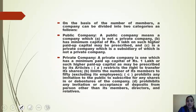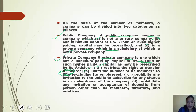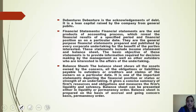On the basis of number of members, companies can be divided into public company and private company. A public company has a minimum capital of five lakh rupees. A private company has a minimum paid-up capital of one lakh rupees, restricts the right to transfer shares, limits the number of members to 50, prohibits any invitation to the public to subscribe for shares, and prohibits any invitation or acceptance of deposits.